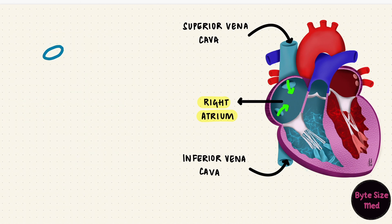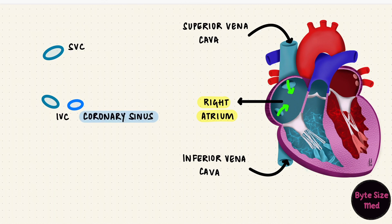Almost all the blood comes in through the superior and inferior vena cava, but there are other conduits as well, like the coronary sinus. This brings back venous blood from the heart itself, because the tissues of the heart also need blood. It opens right next to the inferior vena cava opening. These two openings are actually guarded by valves. The valve of the inferior vena cava is called the eustachian valve, and that of the coronary sinus is called the thebesian valve.